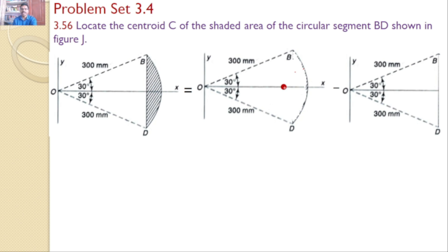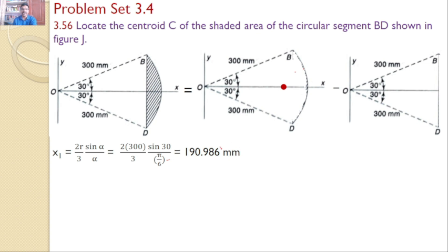For the total circular sector OBD, the centroid is located at X1 = 2R/3 × sinα/α. The radius R = 300 mm and α = 30° = π/6, giving X1 = 190.986 mm. The area of the circular sector is R² × α = 300² × π/6 = 47,123.89 mm².